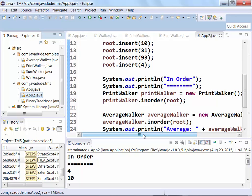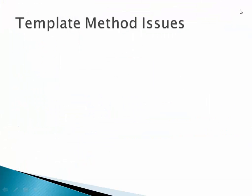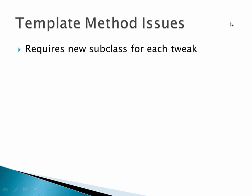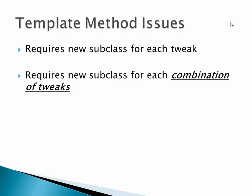Now there are some issues with this. First, you have to have a new subclass for every tweak you want — and it gets worse than that: you have to have a new subclass for every combination of tweaks. In this example we only had one hook method, but if you have three hook methods and three ways of doing each, you'd need nine subclasses to cover all possible combinations. That gets expensive and redundant because you'll have very similar code in a lot of those subclasses.